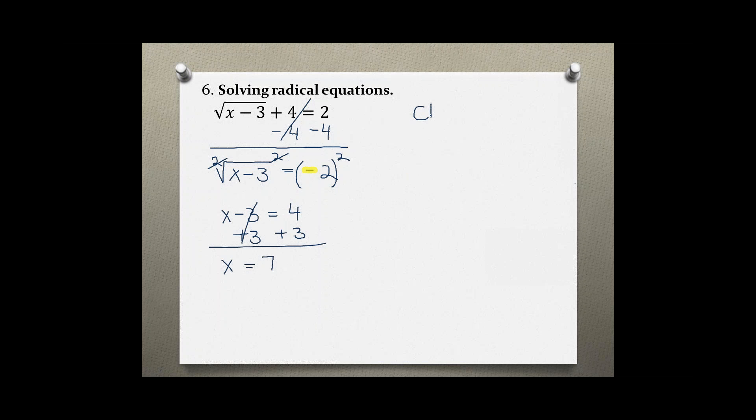That's why it is important to check your solutions with these types of problems by plugging your answer back into the original problem. So we have x equals seven. Seven minus three plus four should be equal to two.